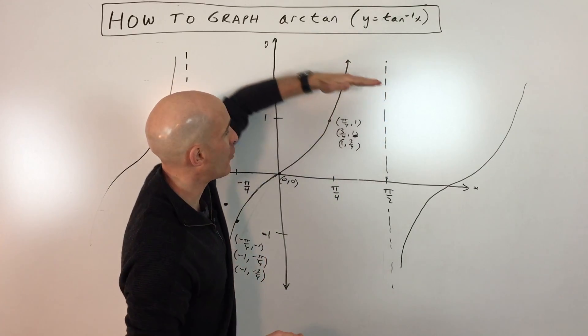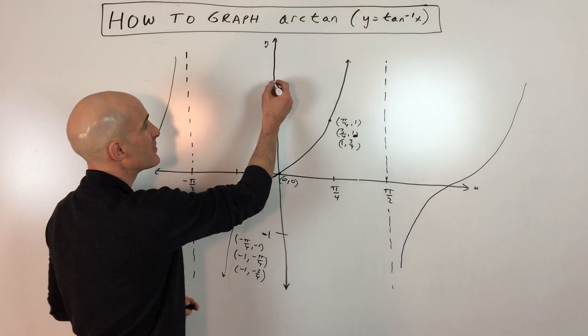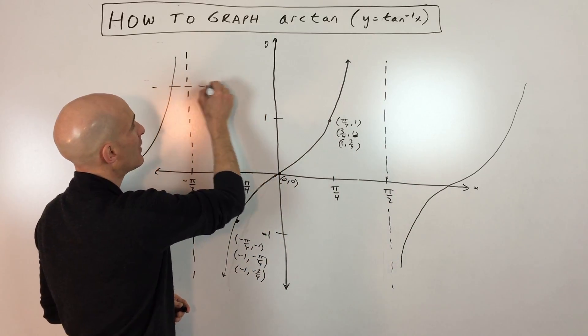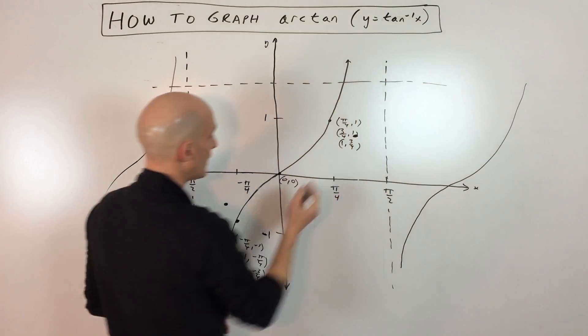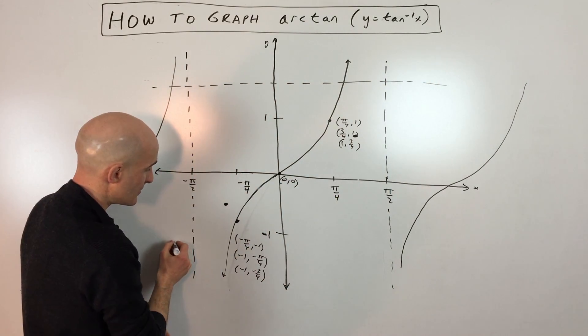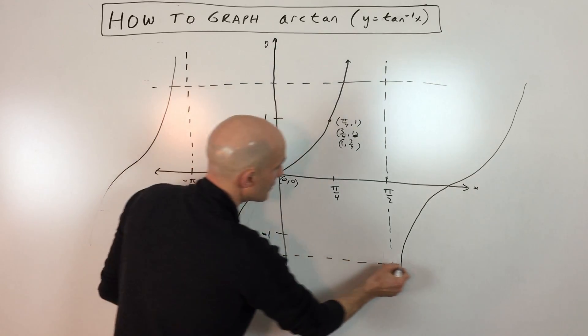So these asymptotes end up becoming horizontal asymptotes, and they're going to be up here at pi over 2, which is about 1.57. So I'm just going to put them right about here, and right about at negative 1.57. So that's going to be right about like that.